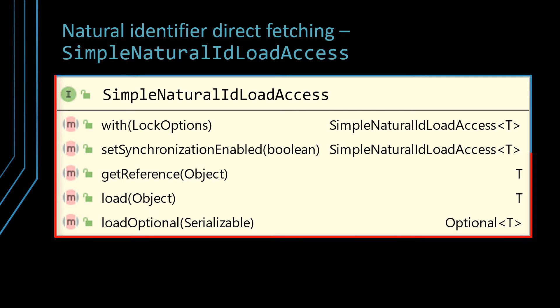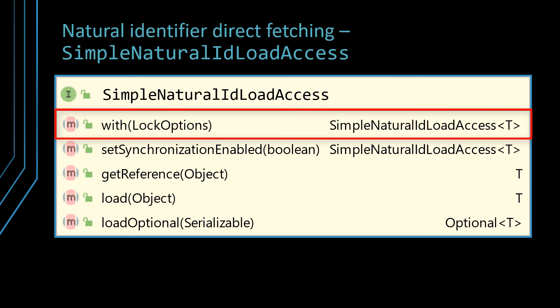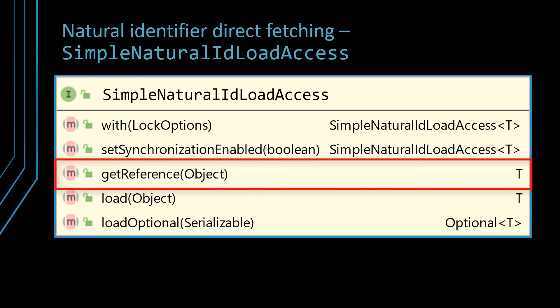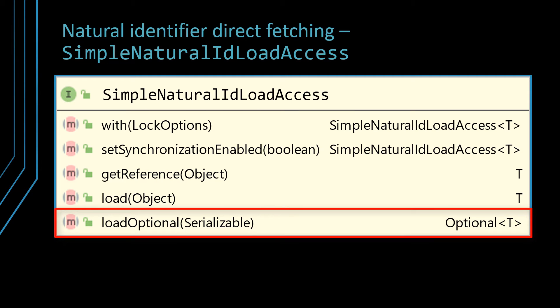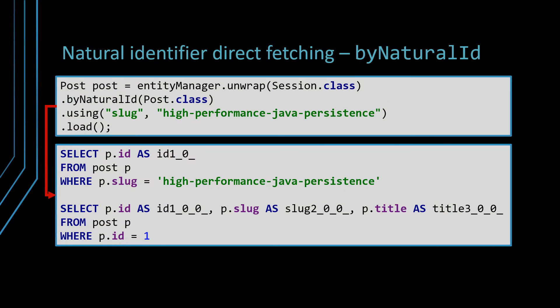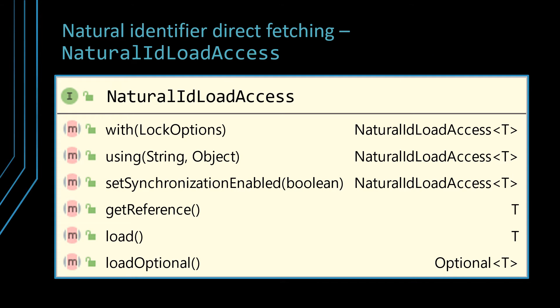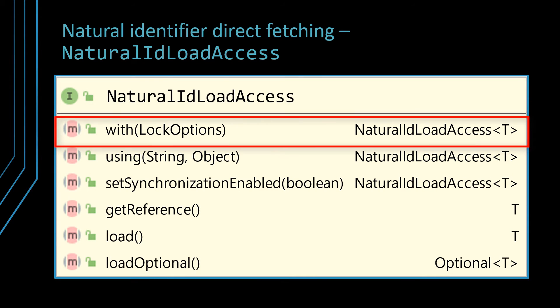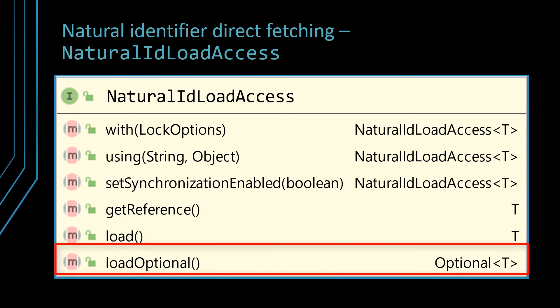The bySimpleNaturalID method returns a simple natural ID load access object, which allows you to set a given lock mode strategy, or choose whether to return a POJO via the load method, or an entity proxy via the getReference method. The loadOptional method returns an optional object that contains either the associated entity, or null if the entity was not found in the database table. Another option to load an entity via its natural identifier is to use the byNaturalID method. If the natural identifier is mapped to a single column, it's much more convenient to use the bySimpleNaturalID method since you don't have to declare the natural identifier property name. However, if the natural identifier is a composite, then you have to use the byNaturalID method, since you need to specify both the natural ID value and the entity property for which the value is bound to. The byNaturalID method returns a natural ID load access object, which allows you to use a lock mode strategy, return a proxy via getReference, or an optional object via loadOptional.